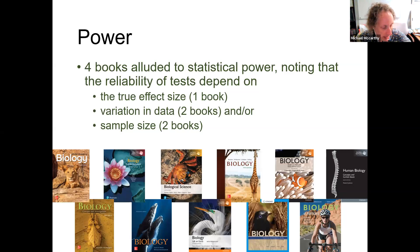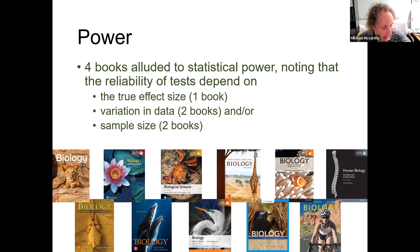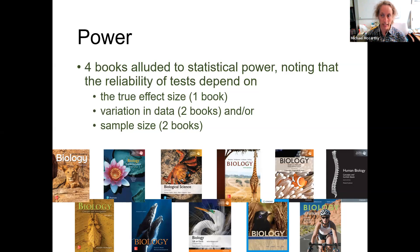The absence of power is another issue. Only four books alluded to statistical power — without even using the term. They noted that reliability of a statistical test depends on true effect size (one book), variation in the data (two books), and sample size (two books). None noted that power also depends on the statistical test applied. Power is underrepresented and not really explained in most of these textbooks.